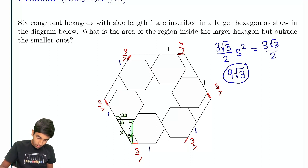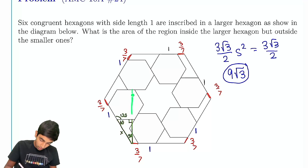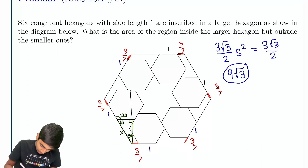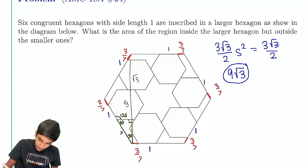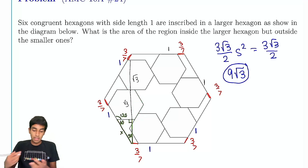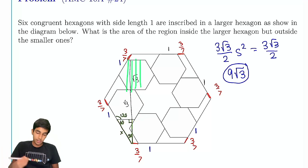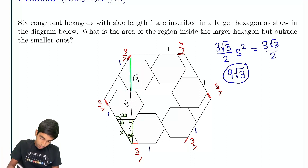Looking at the heights of the smaller hexagon: since the side length is 1, the height of a regular hexagon with side 1 is √3. We have this height √3, this one √3, and this one √3 as well. Because they're all heights of hexagons with side 1, all these heights equal √3.